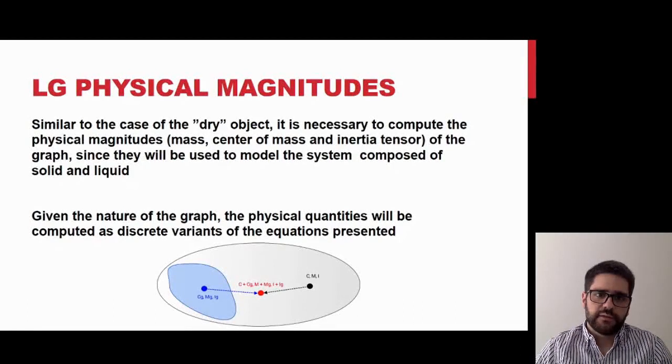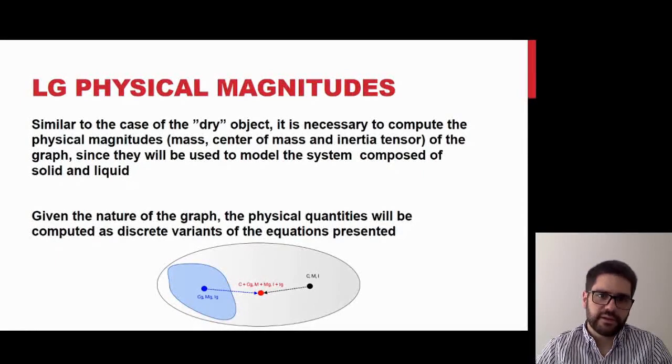Similar to the case of dry objects, we need to compute the graph's physical magnitudes in order to perform the position update. Given the discrete nature of the graph, the physical magnitudes can be computed using discrete variants of the equations previously presented. Then we must combine the magnitudes of the dry object and the graph to obtain the magnitudes of the complete liquid-solid system.